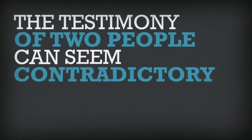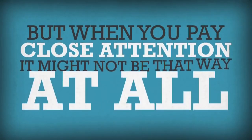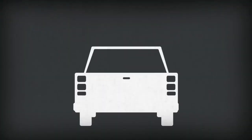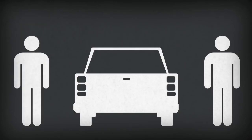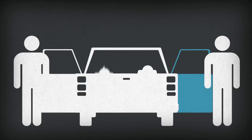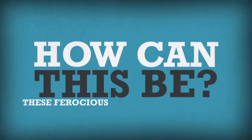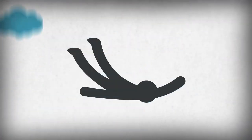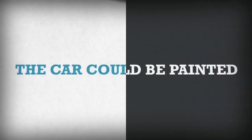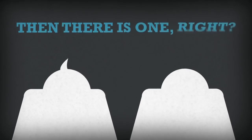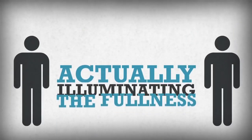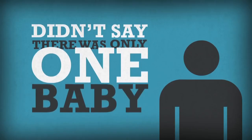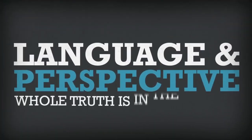Moving on to P for Perspective. Sometimes the testimony of two people can seem contradictory, but when you pay close attention, it might not be that way at all. Say there was a car parked in the middle of the street — a person on the right says the car door is blue and there's a baby in the back, and the person on the other side says the car door is white and there are two babies. The car could be painted white on one side and blue on the other, and if there are two babies, then there is one, right? Both are actually illuminating the fullness of the scene. The guy on the right didn't say there was only one baby — he just mentioned one. You've got to pay attention to the language and perspective. Sometimes the whole truth is in the details.